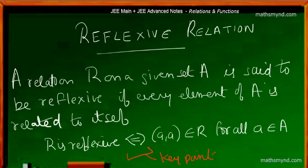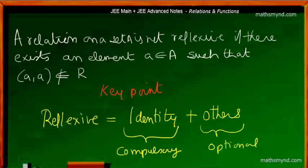A relation on a set A is not reflexive if there exists an element in set A such that the ordered pair of that element with itself is not present in the relation. So the key point is that in a reflexive relation, all ordered pairs of the form (a, a) must be present.